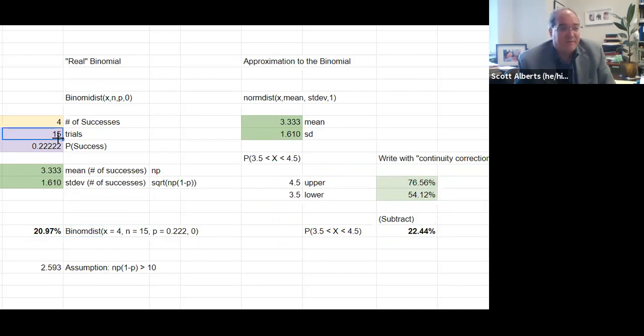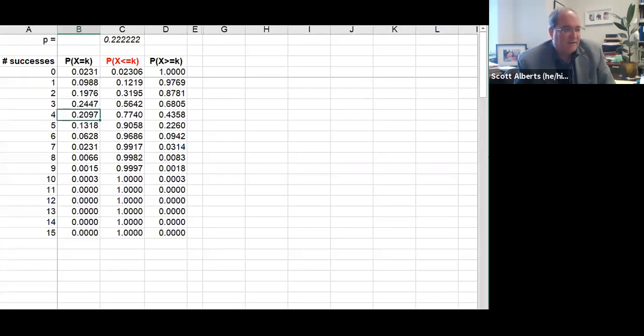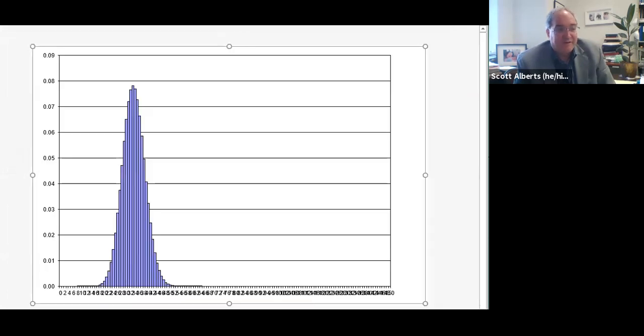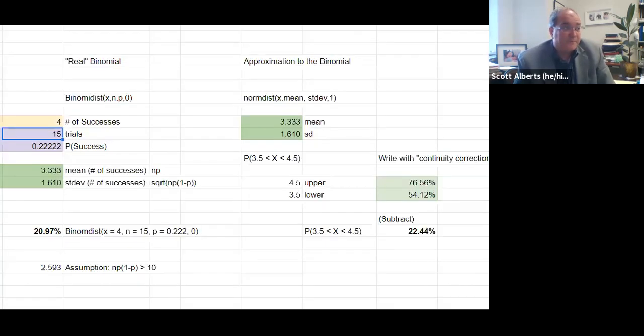Let's change it now and think about 150 trials. For 15, it looked kind of normal, but for 150, that looks exactly like the normal distribution. Here we are, I'm going to make the trials 150. Because we built everything in Excel, everything's going to calculate itself ahead of time.